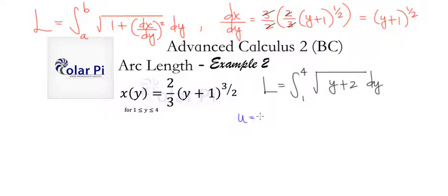And so you just say u equals y plus 2, wherein we see that du is just dy. And our integral L can be written as, since u is y plus 2, this y equals 1 is going to turn into 3, and then the 4 is going to turn into 6.